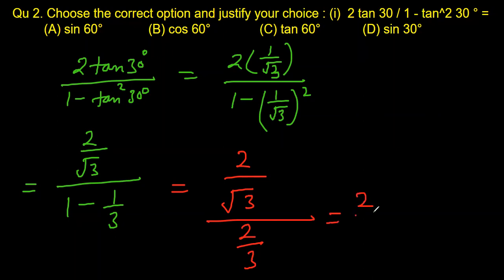We can write it as 2 by root 3 into 3 by 2, 2 and 2 cancel, we get 3 by root 3. And 3 by root 3 is same as root 3. You can rationalize the denominator, 3 gets cancelled, you get root 3.